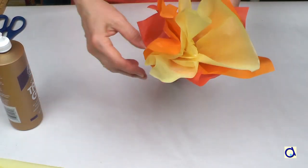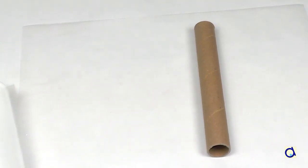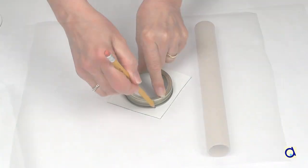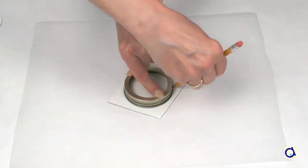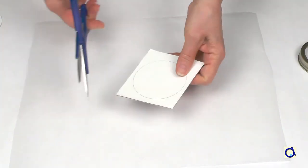If you want to make a little more sophisticated torch, also start with a fairly thin cardboard tube. Then draw a circle on thick cardboard. Cut out the cardboard circle.